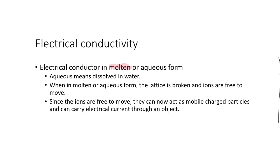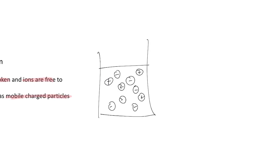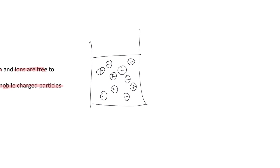However, in molten, which means that liquid form, or aqueous form, they do conduct electricity. Aqueous just means dissolved in water. So when in molten or aqueous form, the lattice is broken. So those ions are now free to move. They can now act as mobile charged particles. When you've got them dissolved in water, all of those ions can move into whatever direction they feel like. So since they can all move around and about, they are now mobile and they are charged. Therefore, they're acting like mobile charged particles.